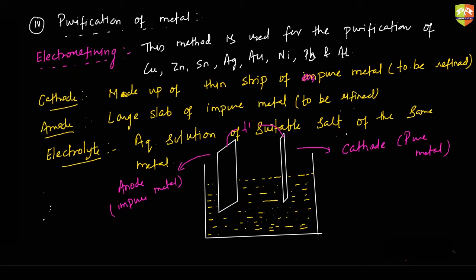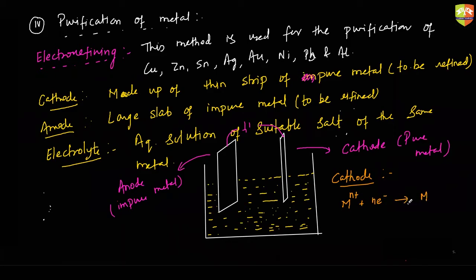The reaction at cathode: reduction takes place. If the metal is M, the general expression is M^(n+) + n electrons → M.